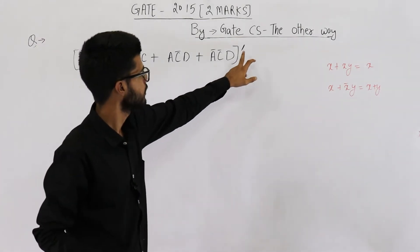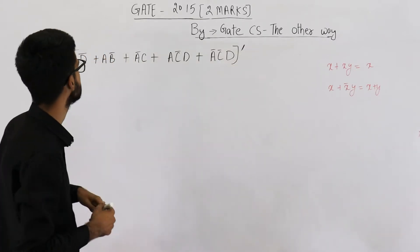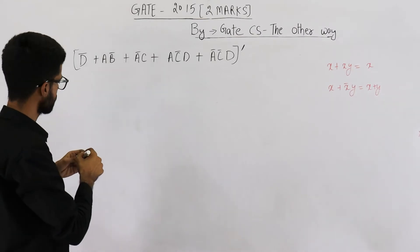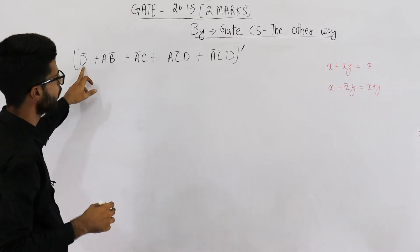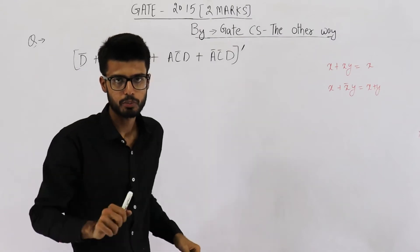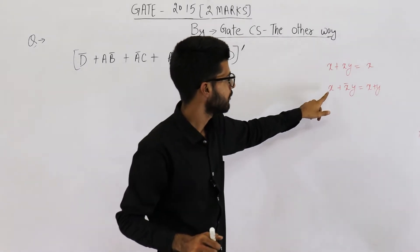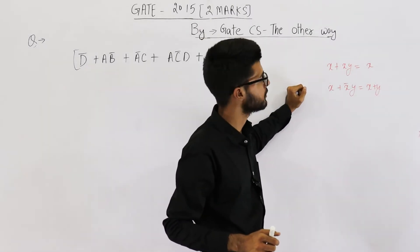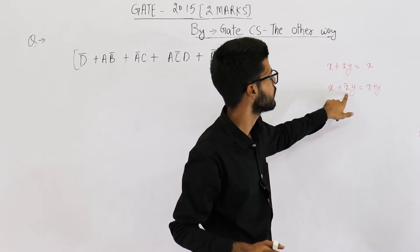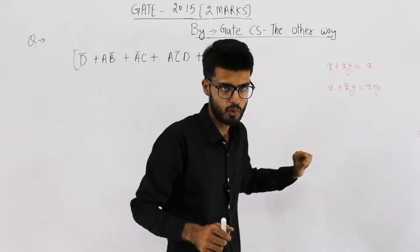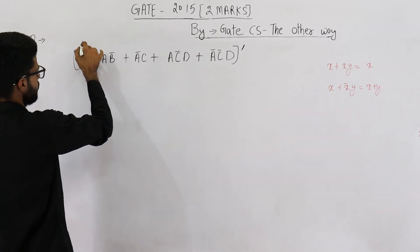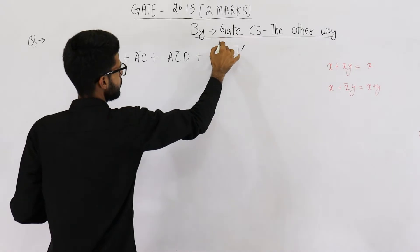So you can see we have a whole complement. We have d complement and d here — that means the absorption law is applicable. So both of these are forms of absorption law. You can see x + x̄y = x + y. So let us apply the absorption law on this one as well as on this one.